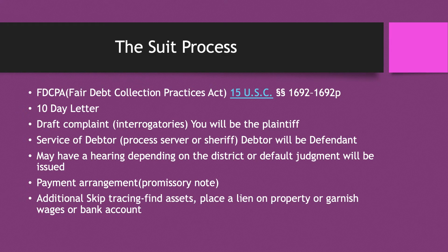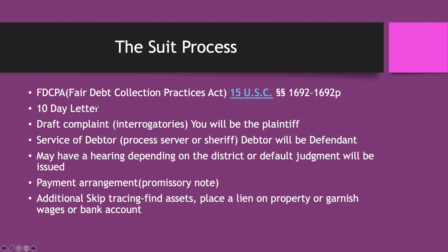Let's say you don't hear from them and no payment arrangements are made, but you did get a judgment. The judgment alone won't give you the money — you're going to have to do additional skip tracing to find assets. You'll either have to garnish them or put a lien on their property for the amount they owe you. If the property is ever sold, they'd have to pay your lien first. You can also garnish their bank account or employer. You must have a judgment before you can garnish someone — you can't go straight from the 10-day letter to garnishment.